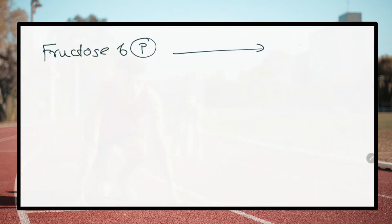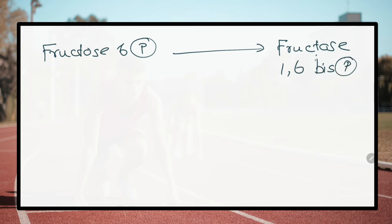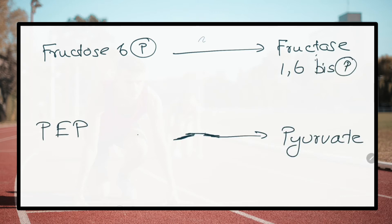What are the other two enzymes that catalyze the irreversible steps of glycolysis? Phosphofructokinase 1 and pyruvate kinase.